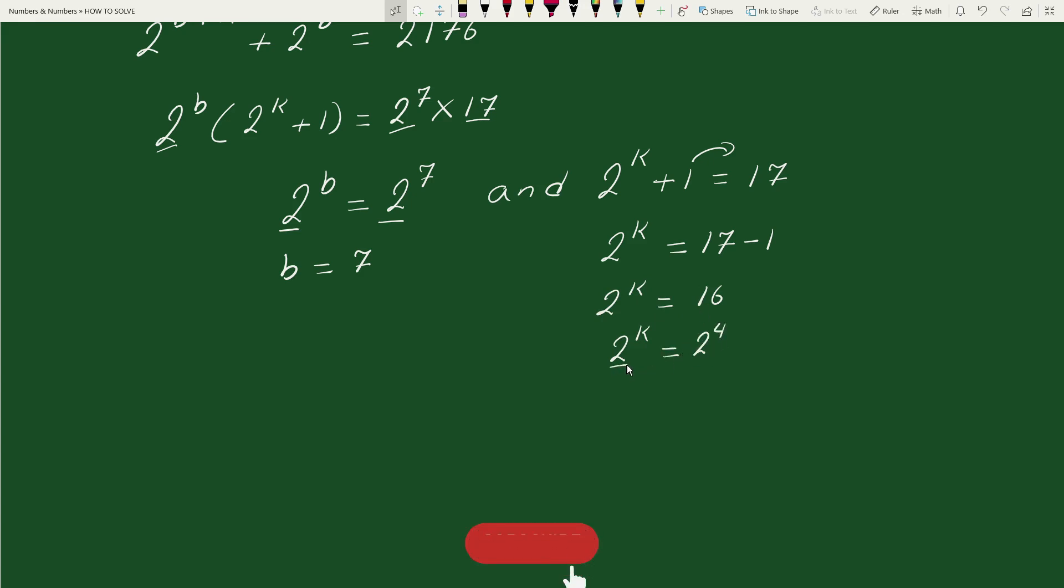Now since bases are equal therefore k equals to 4. Earlier we have taken a equals to b plus k. Now substituting the value of b and k here we get 7 plus 4 equals to 11.